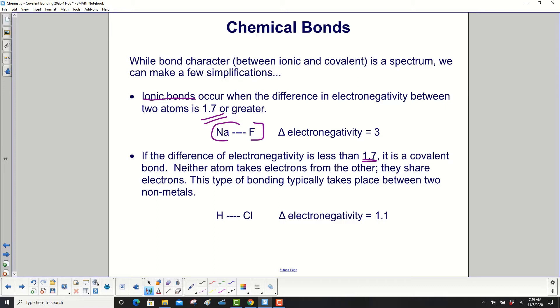Neither atom takes electrons from the other, they share them. This type of bonding typically takes place between two nonmetals, like hydrogen and chlorine, where the difference in electronegativity is 1.1.